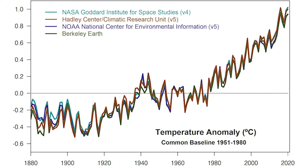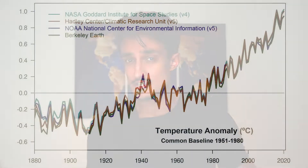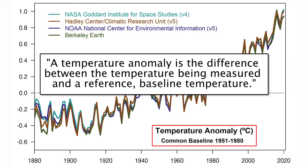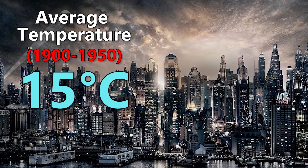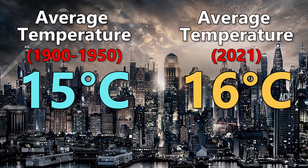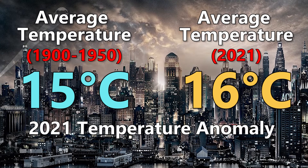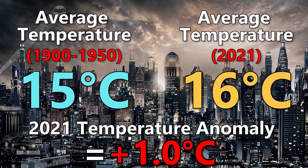Now, I know what some of you are thinking — but Roche, what about all those graphs showing how global temperatures have risen over the last hundred years? If we can't measure the exact surface temperature of the planet, then what are they all about? Well, if you look closely, you'll see that these graphs aren't showing the actual temperature of the planet. They're showing temperature anomalies, which are defined as the difference between the temperature being measured and a reference baseline temperature. For example, if the average temperature of Gotham City was 15 degrees between the years 1900 and 1950, and this year it averaged 16 degrees, then the temperature anomaly would be plus one degree relative to the baseline period.